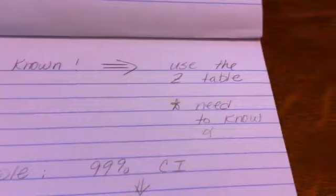So now let's assume that we actually know our population standard deviation, and we are going to construct a confidence interval. So if we know sigma, then that means we are going to use our z-table.